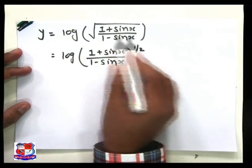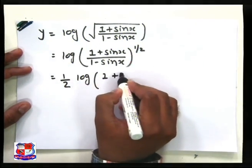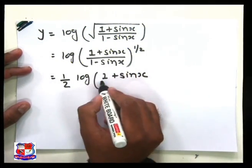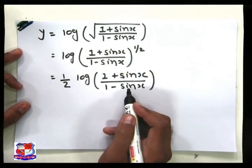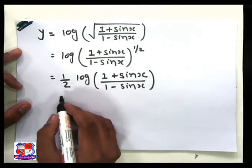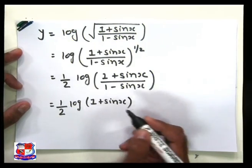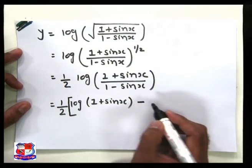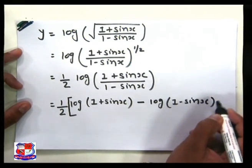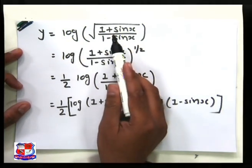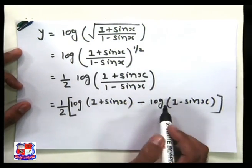Whatever power is inside the log, that power comes forward. So we can write our sum as (1/2) log of (1 plus sin x) divided by (1 minus sin x). Again, we apply the log rule: whatever value is inside the division, we can write it as a subtraction of logs. So we write (1/2)[log(1 plus sin x) minus log(1 minus sin x)].